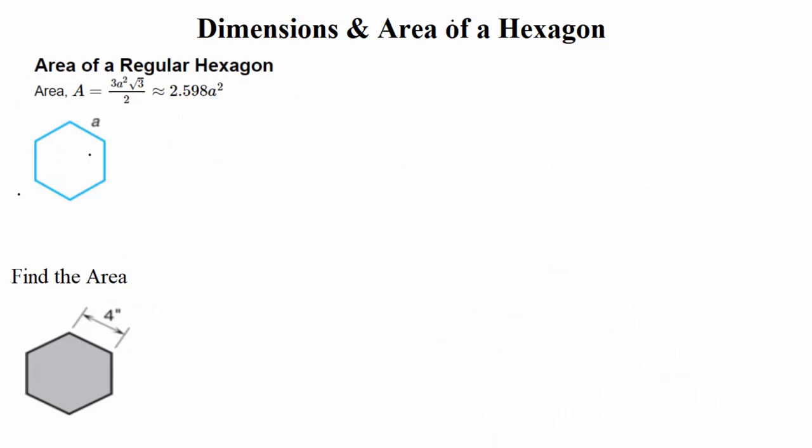Here I have another hexagon down at the bottom of the screen, but for this one here, we're going to focus on how to find the area of it. At the top of the screen, I have the formula for finding the area of a regular hexagon. We're given that the area is equal to 3A squared times the square root of 3 divided by 2. But they've kind of broken down some of that calculation for us, which is good. It makes the formula a lot easier to calculate. So the formula that we actually need is 2.598A squared. That's the formula we're going to want to use for our purposes here.